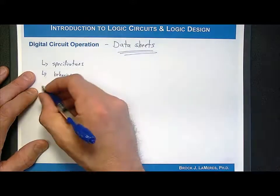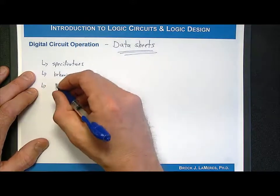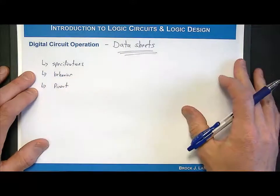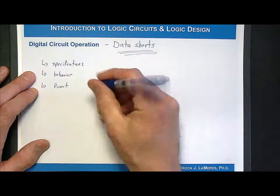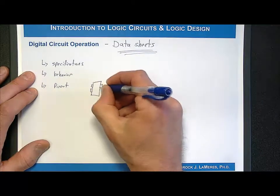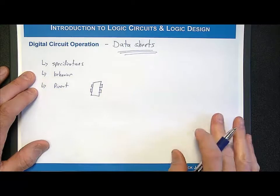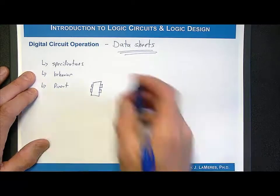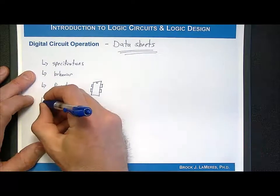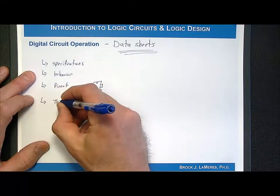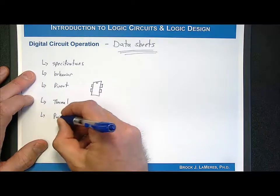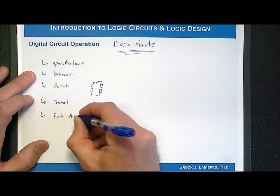You'll find that in the datasheet. It also tells you information about the pinout — what the device is. So when you get the packaged part, where are the pins? Which ones are inputs? Which ones are outputs? Which ones are power supply? How do you tell where pin one is? Then it's also going to give you information about the thermal characteristics.